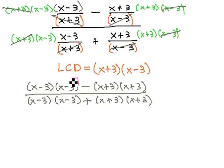What's nice is you might notice that each pair being multiplied together is essentially a perfect square. We have (x-3)² minus (x+3)², over (x-3)² plus (x+3)².